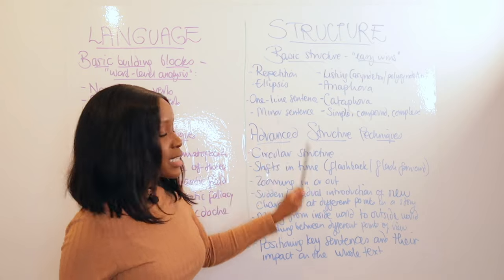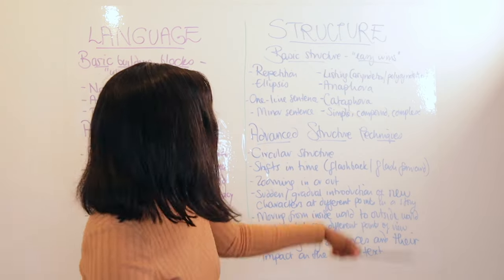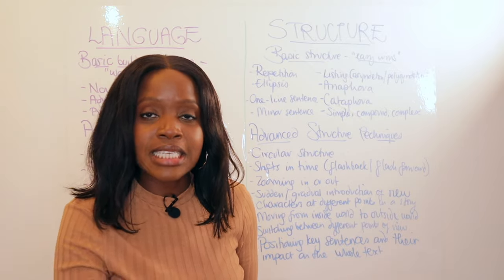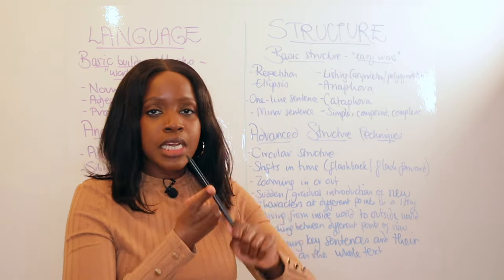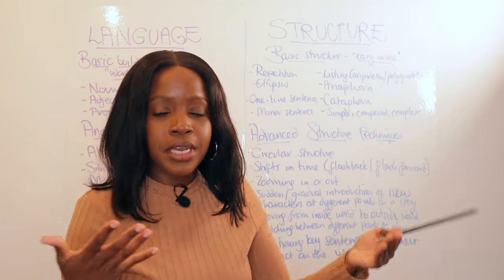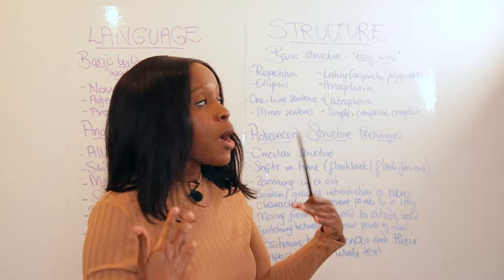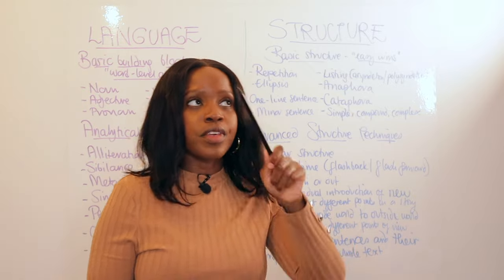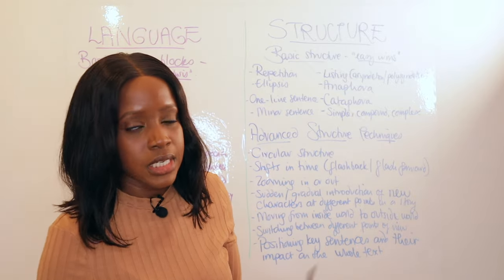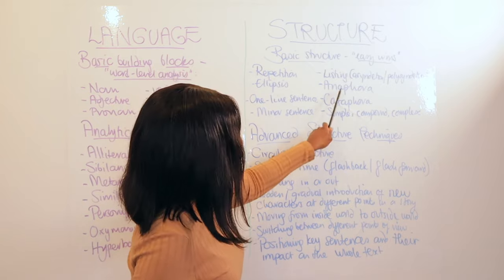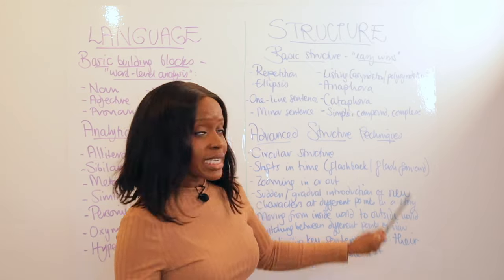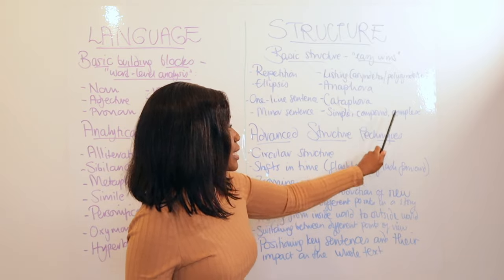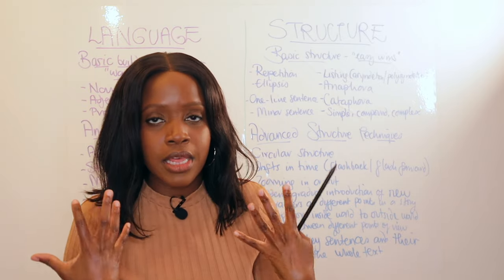Also a minor sentence — a one-word sentence. For listing, you need to know the difference between asyndetic listing, where items are listed with commas and no conjunctions, versus polysyndetic listing, where you have 'this and this and this' or 'this but this but this.' Then anaphora, cataphora, and sentence types — simple, compound, and complex sentences — are easy structural wins.